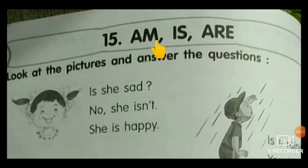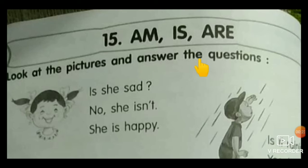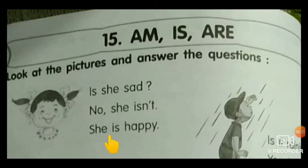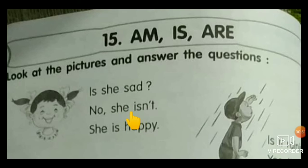I hope all of you understood the grammar point of AM, IS, ARE. Now let's open page 54 in the grammar book, lesson number 15. Look at the pictures and answer the questions. Is she sad? Observe the picture. No, she is not. She is happy. She is a singular pronoun, so after SHE we use IS.